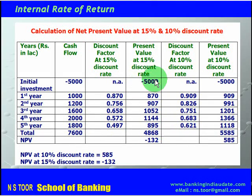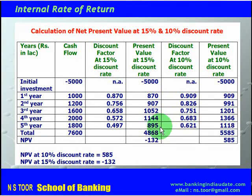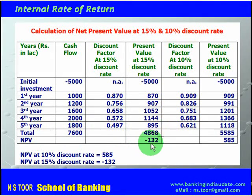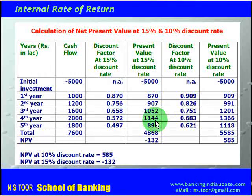This is the initial investment C0. The present values of cash inflows from year one through five — C1 through C5 — total 4868. In this case, the net present value is minus 132, since the initial investment is 5000 and the present value of returns at 15% is 4868, resulting in a negative net present value.